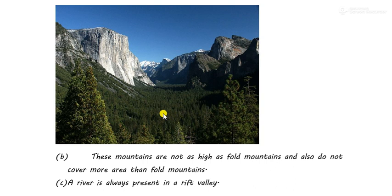These are the three main features to learn. The last feature from your book is also important: the sides of block mountains are exposed to weathering, and so they usually get modified in their shapes and sizes. These steep sides can become very gentle over the years due to the process of weathering and erosion.